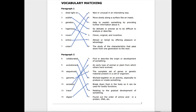Let's go over the vocabulary matching that we did at the beginning of the lesson. Number 1, shed light on is C: help to explain something by providing information about it. Subtle is D: so delicate or precise as to be difficult to analyze or describe. Genetics is G: the study of the characteristics that pass down from one generation to the next. Ingenious is E: clever, original, and inventive.